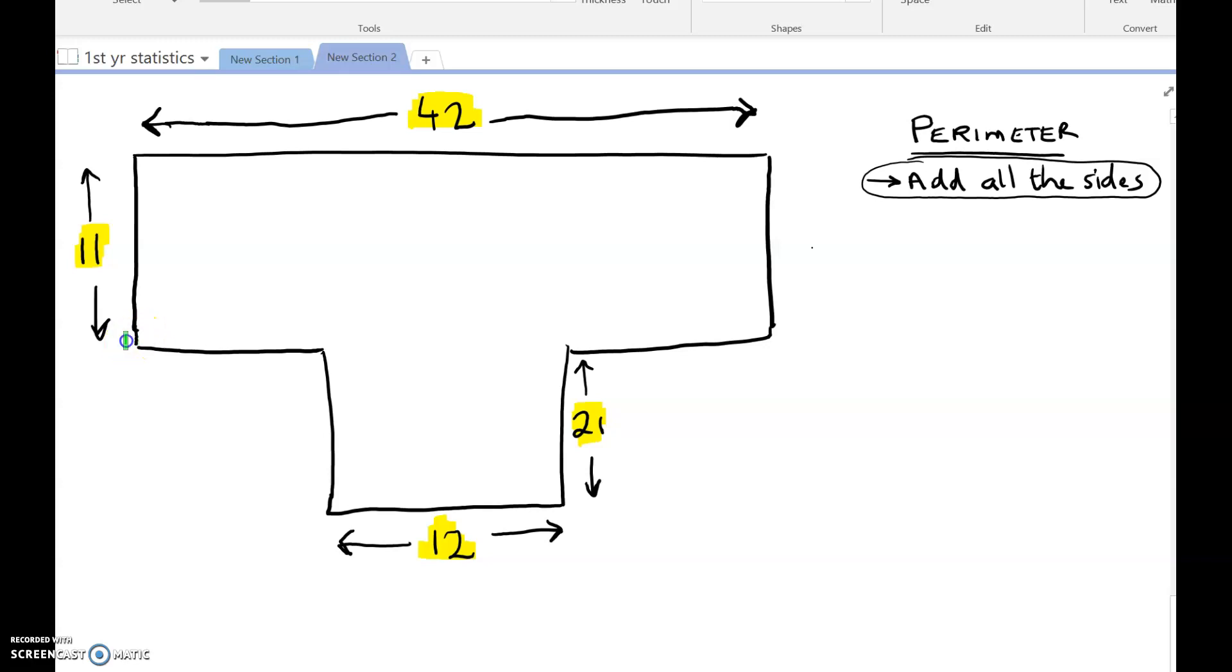So first one I see here is this one, this is 11. Now is there any other sides on this shape that is also 11? Well this one over here because it's the same side, so that's also 11. So we can fill in 11 there for that.